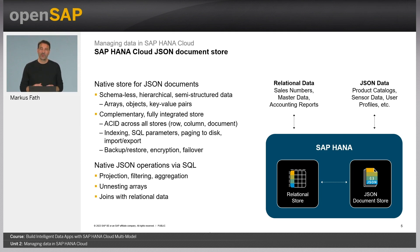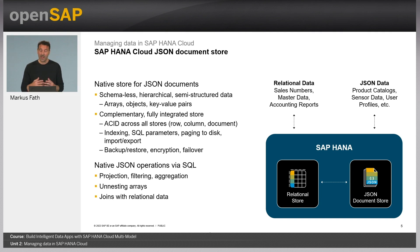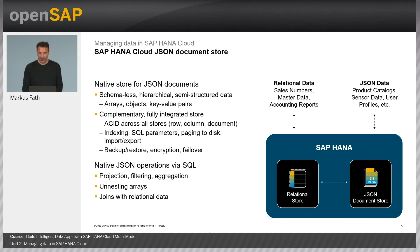From an operational perspective, all the characteristics you know from SAP HANA Cloud are also valid for the JSON document store, including backup and restore mechanisms, encryption, and failover concepts. Data in the JSON document store is also accessed by means of SQL, allowing standard SQL queries with projection, filtering, and aggregation mechanisms like you know from relational tables. There are also specific methods, for example a method that allows you to unnest an array — a set of elements stored inside a JSON document.